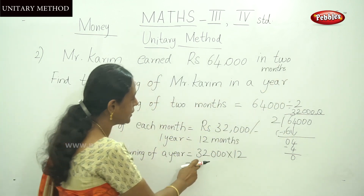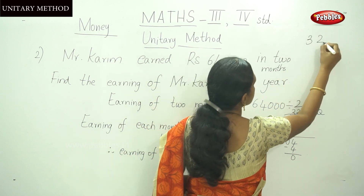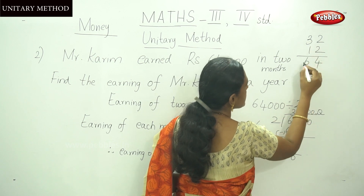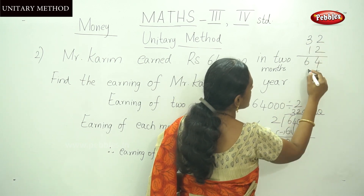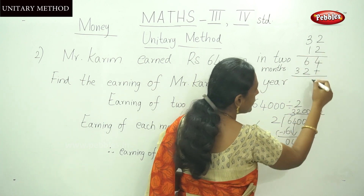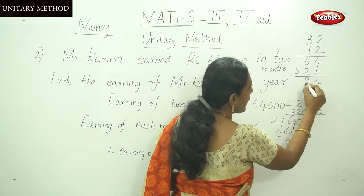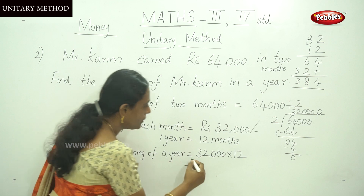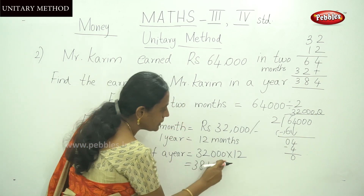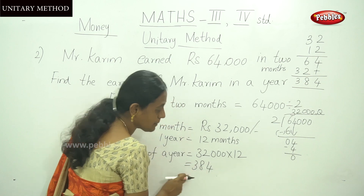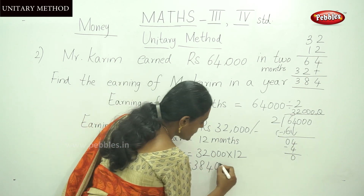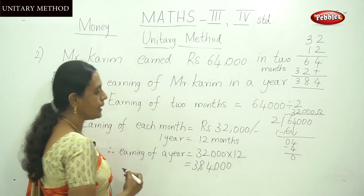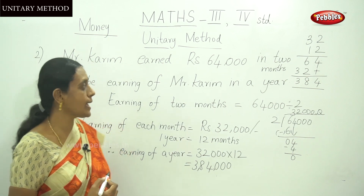For 32 multiplied by 12: 2 twos are 4, 2 threes are 6; then 1 two is 2, 1 three is 3; adding gives 64 plus 320 equals 384. So 32 times 12 equals 384, and appending the three zeros gives 384,000.